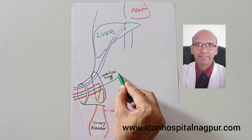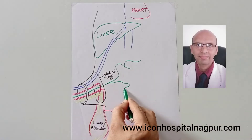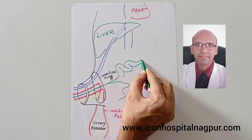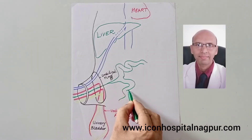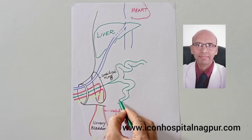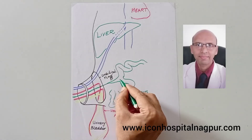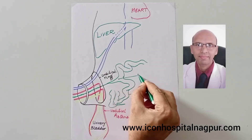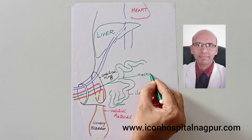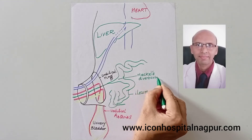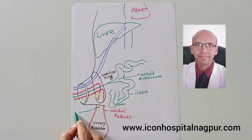The final important structure, which connects with the small intestine — that is the ileum — is called the vitelointestinal duct. This is Meckel's diverticulum, which is the partial remnant of the vitelointestinal duct.